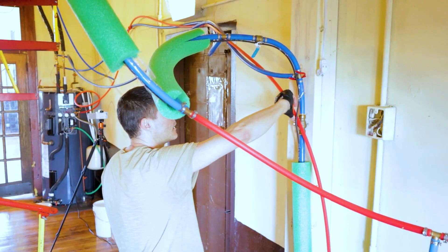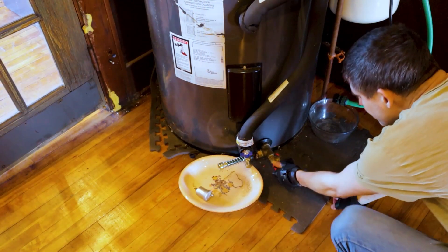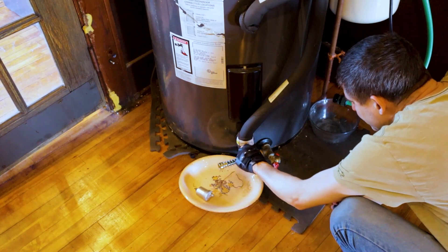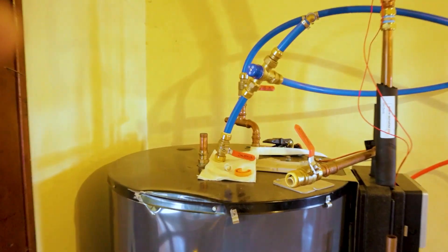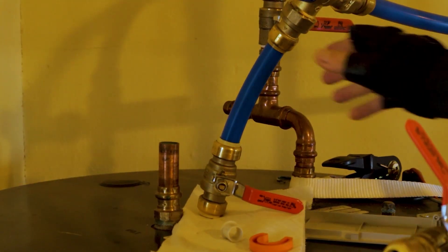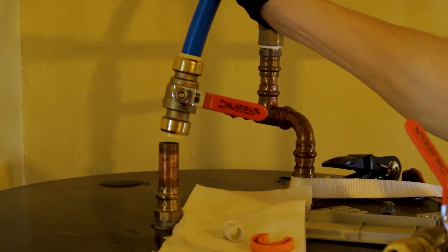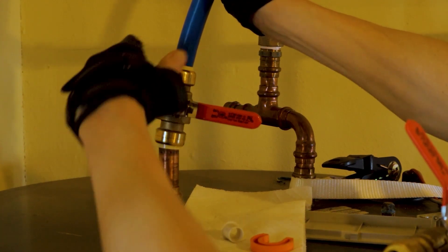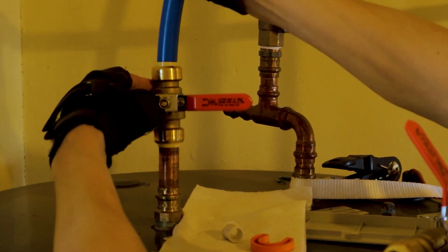First thing we do is shut off any incoming water. Then we double check that all drain valves are shut. Now we reconnect the water output on the main tank. It was disconnected before the freezing season, just as a safety measure.